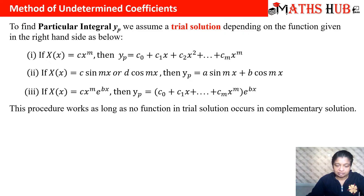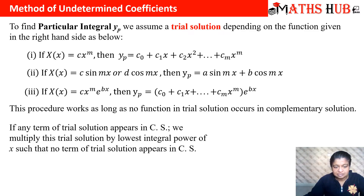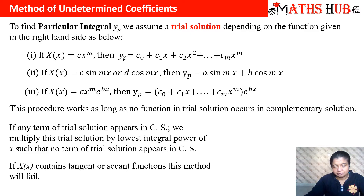An important rule when working with the method of undetermined coefficients: no function in the trial solution should be the same as any term in the complementary solution. If it is similar, we multiply the trial solution by the lowest integral power of x. Also, this method does not work when we have tangent or secant functions — that is a limitation of this method.